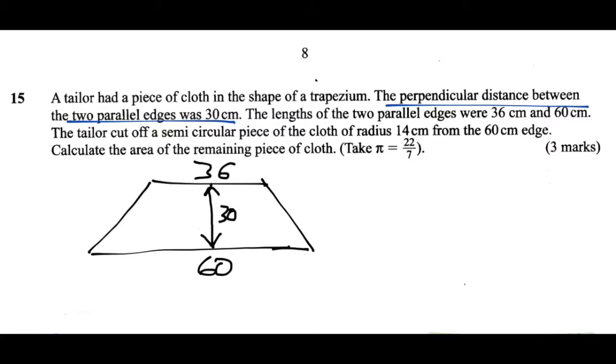And also we're told that the tailor cut off a semicircular piece of the cloth of diameter 14 centimeters from this bottom 60 centimeter edge. So here's the rough outline of a semicircle. And we're told the radius of that semicircle is 14 centimeters.